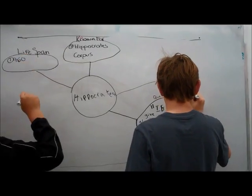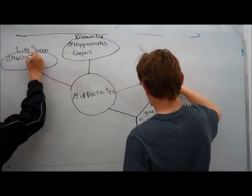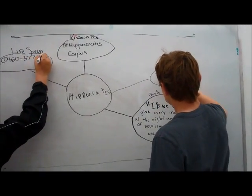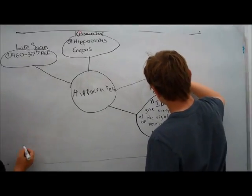His birthplace was on an island, specifically the Aegean island of Kos, Greece, born to the parents of Father Heracleides and Mother Praxitela.